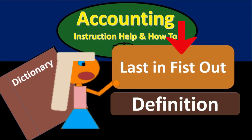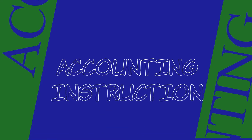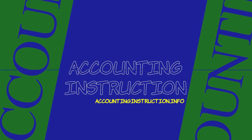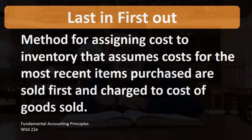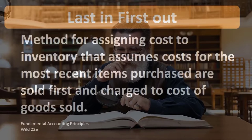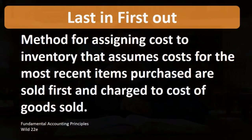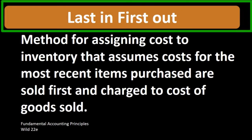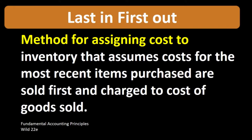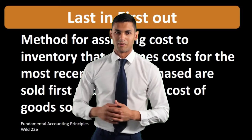In this lecture we will define last in first out according to Fundamental Accounting Principles, Wild 22nd edition. The definition of last in first out is a method for assigning cost to inventory that assumes costs for the most recent items purchased are sold first and charged to cost of goods sold.